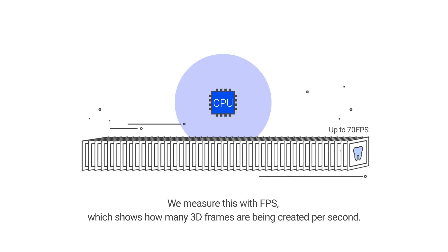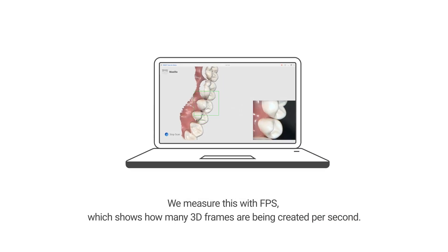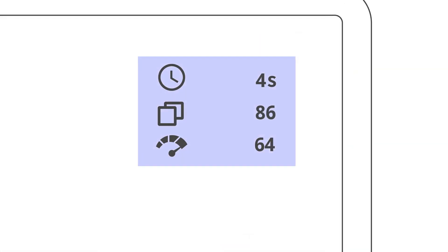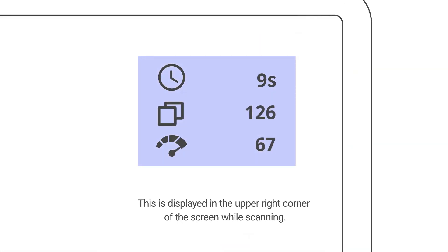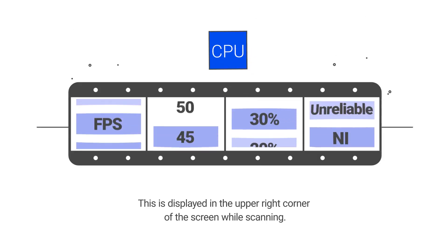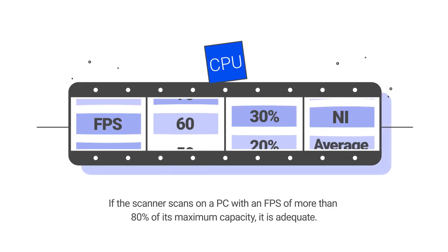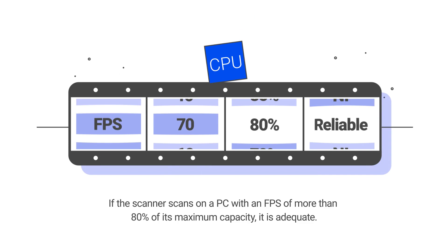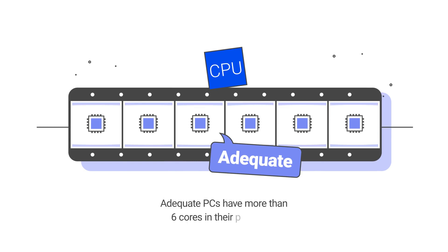We measure this with FPS, which shows how many 3D frames are being created per second. This is displayed in the upper right corner of the screen while scanning. If the scanner scans on a PC with an FPS of more than 80% of its maximum capacity, it is adequate.